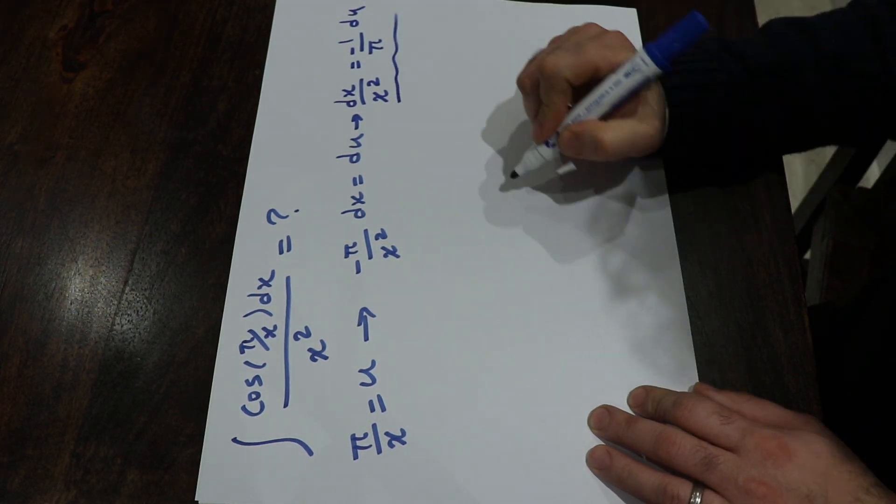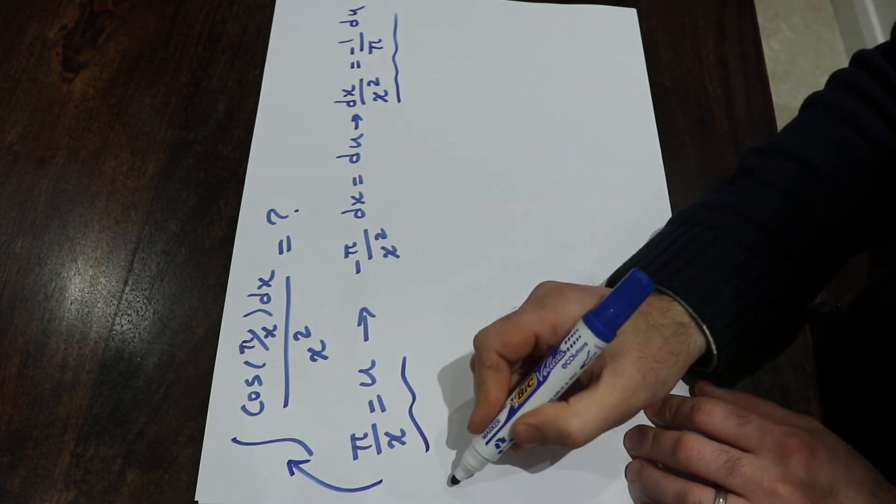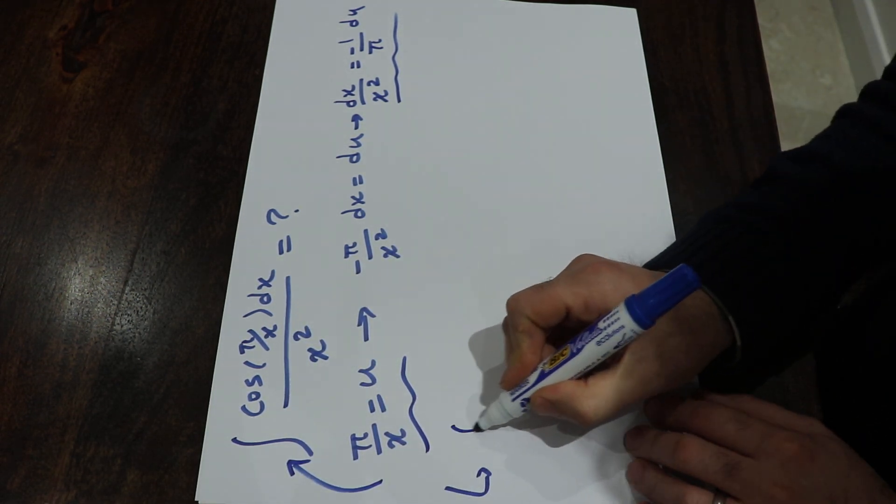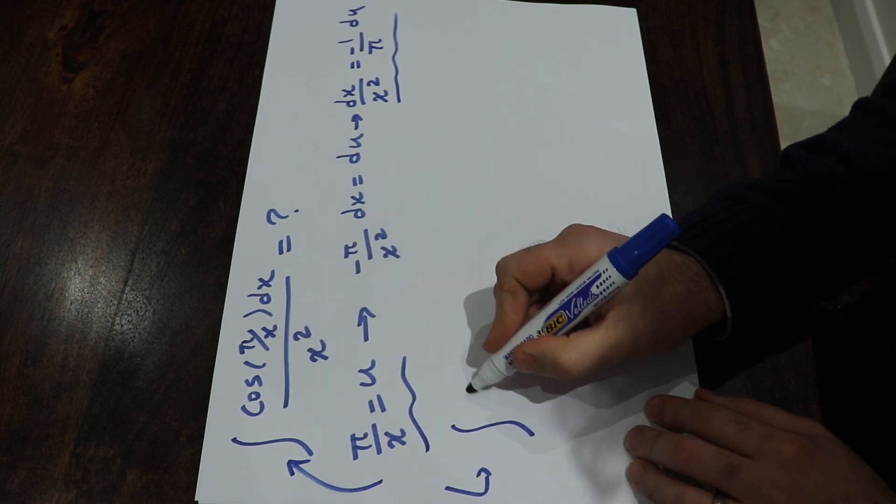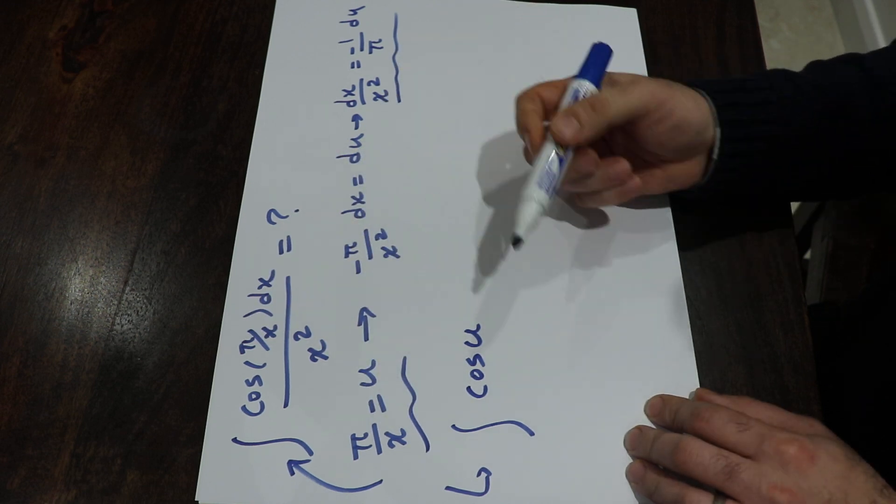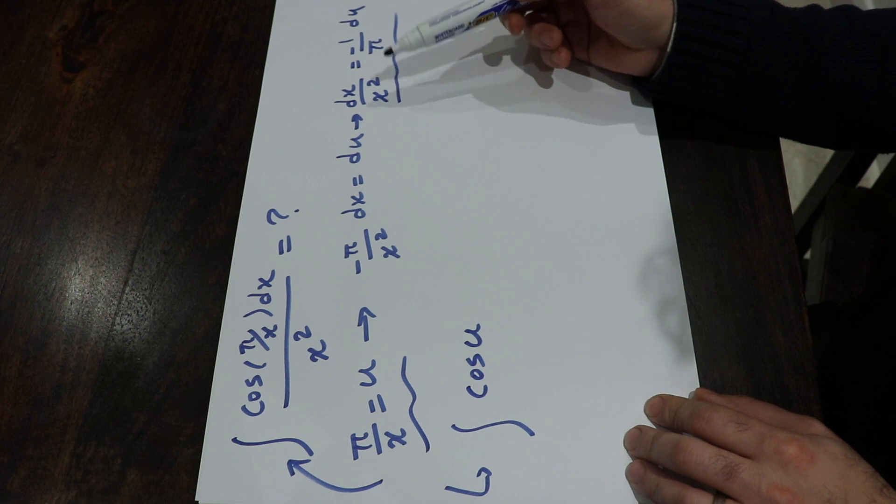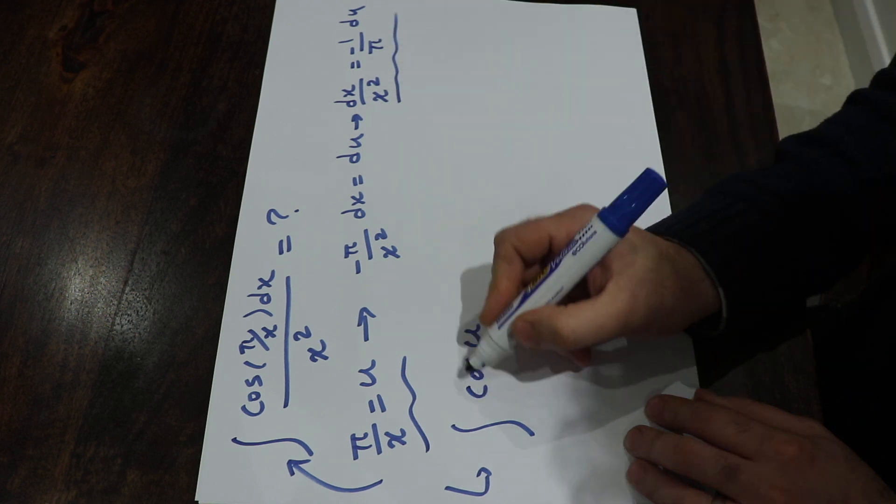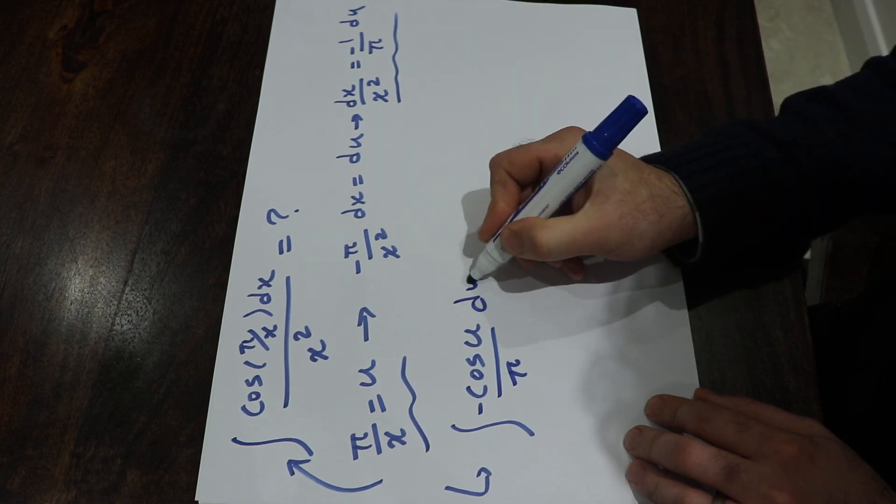So if you substitute this expression and this expression into this integral and rewrite this integral, you will get instead of cosine pi over x, I simply write cosine u because pi over x is u. Instead of dx over x squared, I write minus 1 over pi times du.